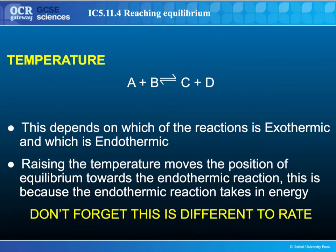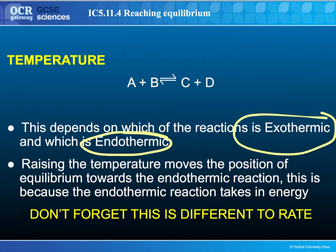And finally, temperature. You need to know which reaction is endothermic and which is exothermic. Exothermic means it gives out heat; endothermic means it takes in heat. Raising the temperature favours the reaction that takes in heat — you're providing the energy it needs, so the endothermic reaction is favoured by raising temperature. This is different to rate though, because rate is increased by increasing temperature due to collision theory. This will just favour and give you a different yield depending on which reaction is exo- or endothermic.